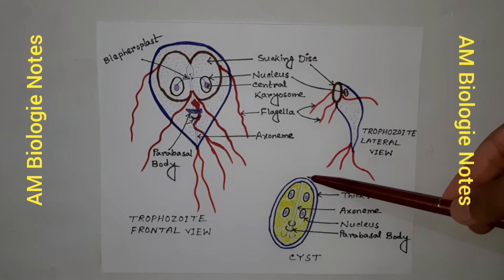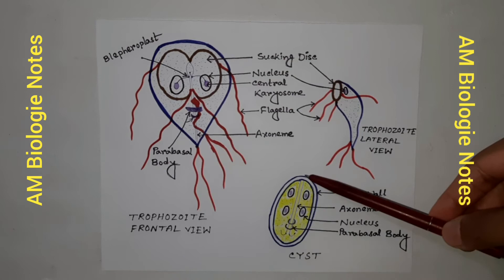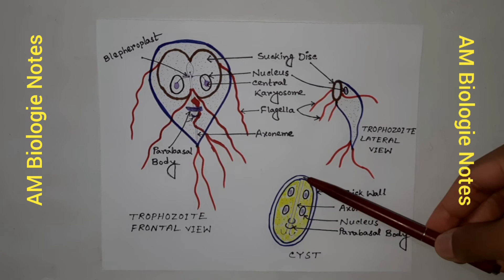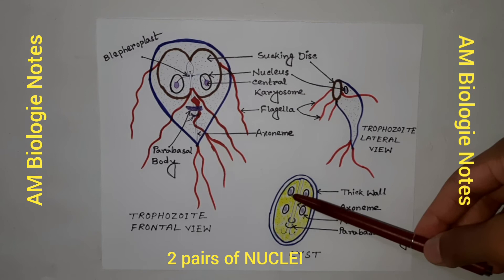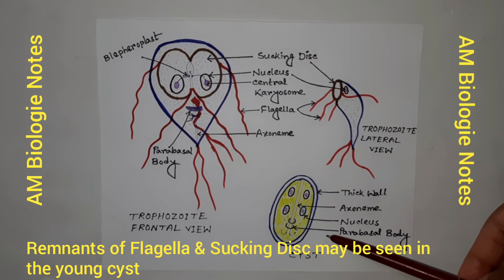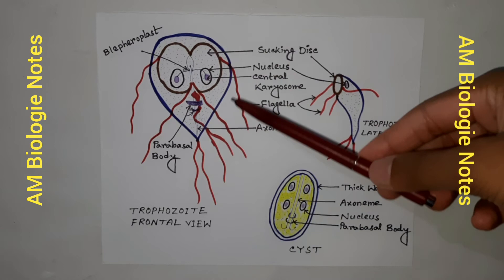This is a picture of a mature cyst. It is the infective form of the parasite. It is oval in shape, measures about 12 micrometers long and 7 micrometers broad, and is surrounded by a hyaline cyst wall. Its internal structure includes two pairs of nuclei. The axostyle lies diagonally, forming a dividing line within the cyst wall. Remnants of the flagella and the sucking disc may also be seen in the young cyst.